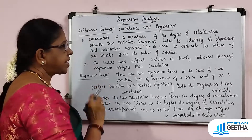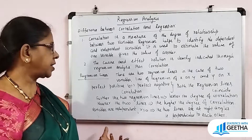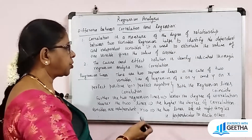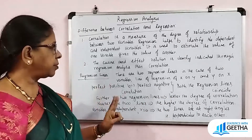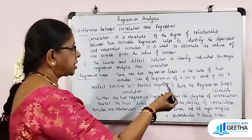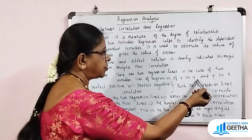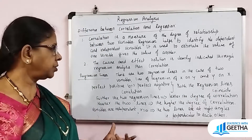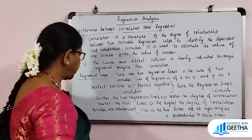Now, what are regression lines? We are dealing with two variables, x and y. There will be two regression lines: the line of regression of x on y, and the regression of y on x.